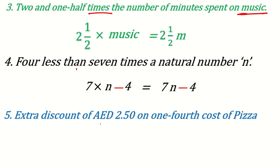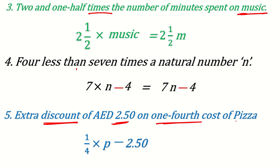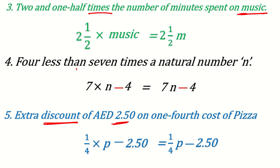Another example: 'extra discount of 2.50 dirhams on ¼ cost of the pizza.' Discount means minus. Using p for the price of pizza, ¼ of p means (1/4)p. So the expression is (1/4)p − 2.50. These are simple examples of how to write algebraic statements for given conditions. You can practice making your own questions and write various statements.